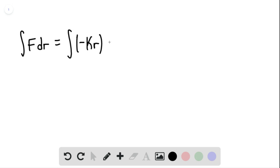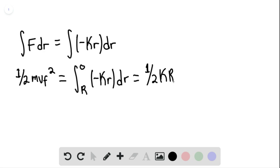And we can say that this would be times dr. And so we can then say that one-half times mv final squared would be equal to the integral from r to zero of negative kr dr. And this is equaling one-half times the kinetic energy times r squared.